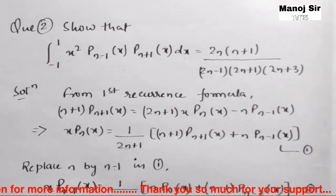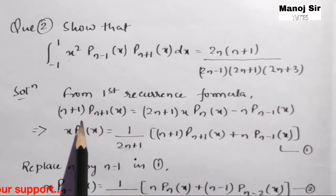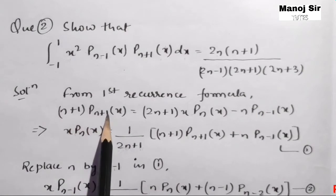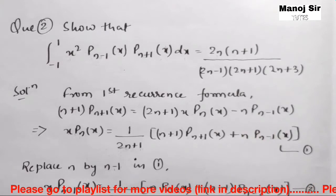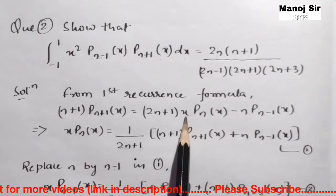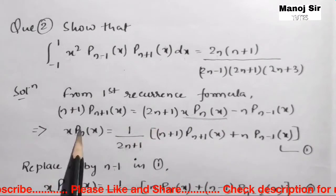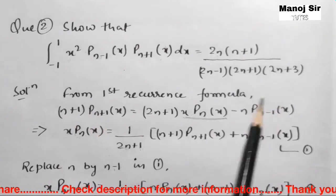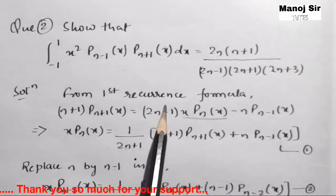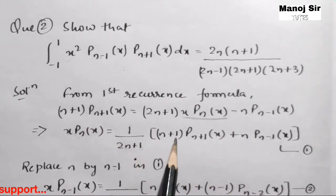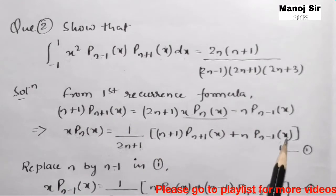We have a total of 5 recurrence formulas for Legendre polynomials. Here we are using the first recurrence formula: (n+1)P_{n+1}(x) = (2n+1)x·P_n(x) - n·P_{n-1}(x). We want to isolate x·P_n(x), so rearranging gives us: x·P_n(x) = [1/(2n+1)] times [(n+1)·P_{n+1}(x) + n·P_{n-1}(x)]. Let this be equation 1.